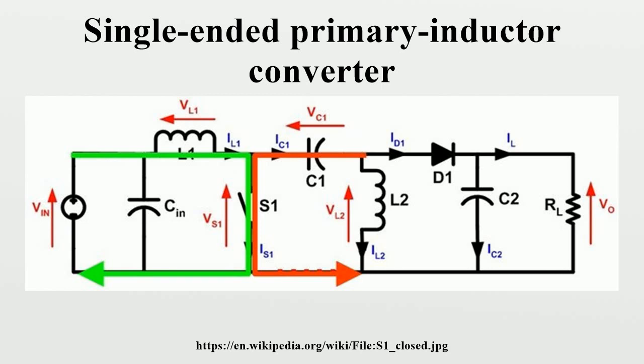whose magnitude is determined by the duty cycle of the switch S1. Since the average voltage across C1 is VIN, the output voltage is VS1 minus VIN. If VS1 is less than double VIN, then the output voltage will be less than the input voltage.